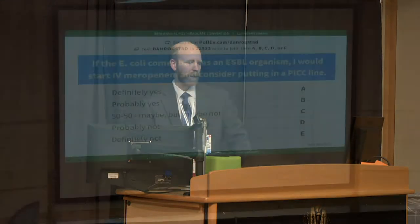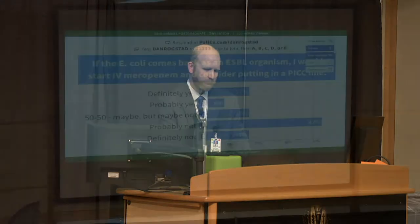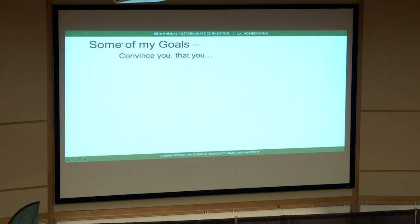Finally: if the E. coli comes back as an ESBL organism — extended spectrum beta-lactamase — and usually only carbapenems can be used, would you start IV meropenem and consider putting in a PICC line? The poll response is 'probably not.' We're going to come back to this.